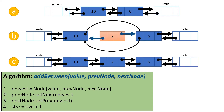In step one, we're creating a new node. The first argument is the value we pass in, the second argument is the previous reference to the node before the insertion, and the third argument is the next reference to the node after the insertion. In steps two and three, we're taking the previous node before the insertion and setting its next reference to the newest one, and in the node after the insertion we're setting its previous reference to the newest one. Then we increase the size of the list. Going back to link list B, we set the new node's next reference to the node after the insertion and its previous reference to the node before. In link list C, we change those references to point to the new node.